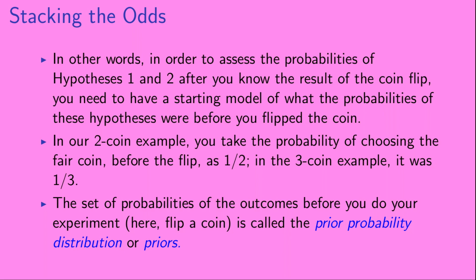In our two-coin example, you take the probability of choosing the fair coin before the flip as one-half. In the three-coin example, you take the probability of choosing the fair coin before the flip as one-third. This set of probabilities of the outcomes before you do your experiment — here, flipping a coin — is called the prior probability distribution, or priors.